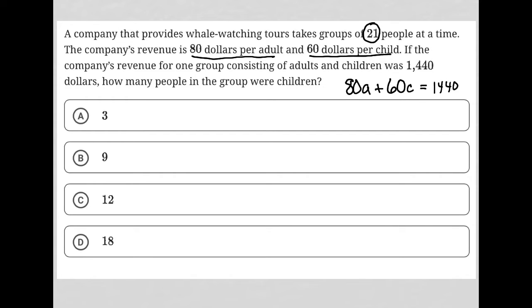But we also know there's only 21 people in a group. So that means A plus C, or the number of adults plus the number of children, has to equal 21. I'm using a strategy to translate word problems where I want to get these sentences into mathematical form. I'm satisfied that I've done that so far.